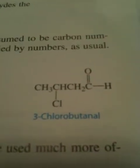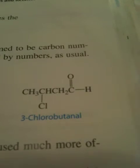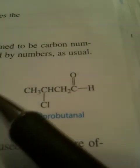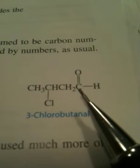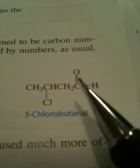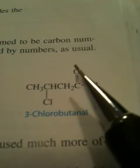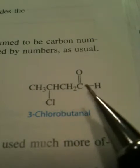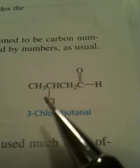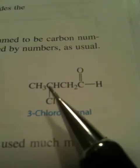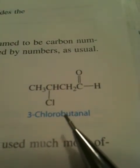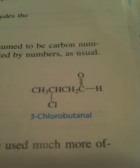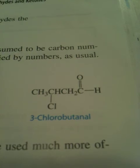And now our last example: this is 3-chlorobutanal. You can see we can have substituents on these aldehydes and ketones. Because it's an aldehyde, the carbonyl group is on the end — it has a hydrogen, the carbonyl group, and a bond to the next carbon, giving a total of four bonds. The chlorine is on carbon one, two, three — that's why we call it 3-chloro, and we add butanal at the end. So there are some more examples for you. I hope you're getting it by now.